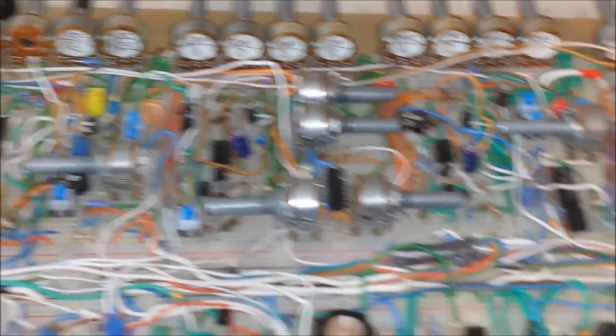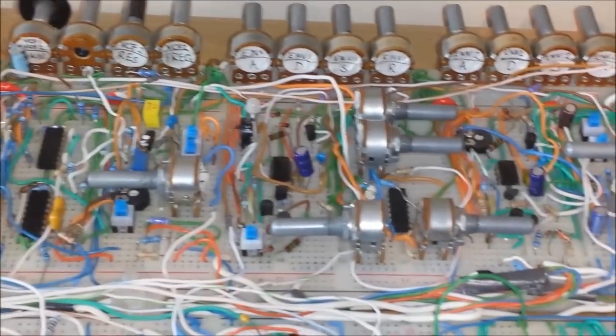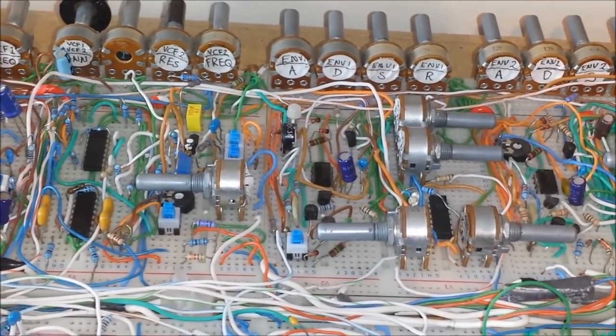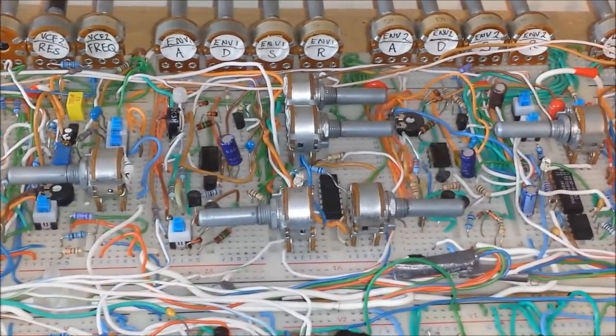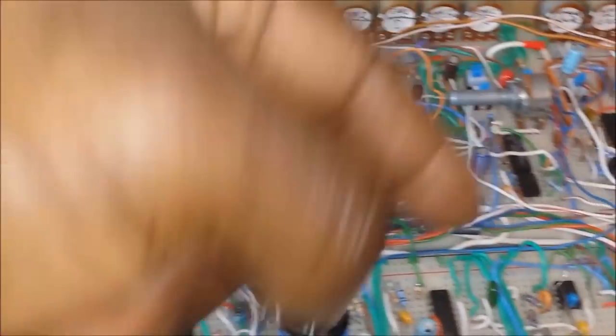If we move over here, we've got two identical ADSRs. One is the main modulation, which is ADSR1, main modulating envelope generator. And then we've got ADSR2, which deals with the VCO2 amplifier.